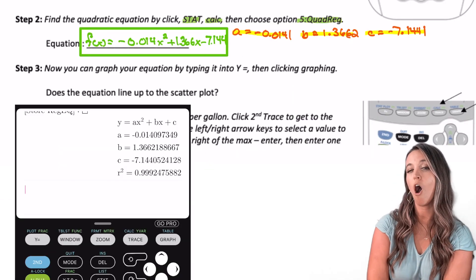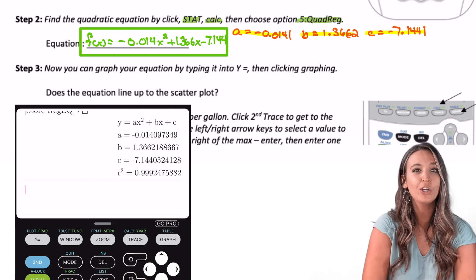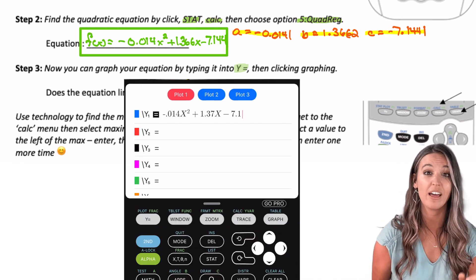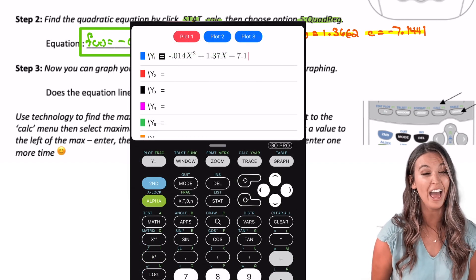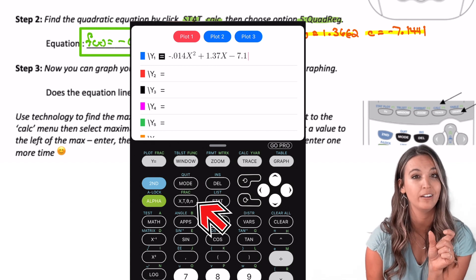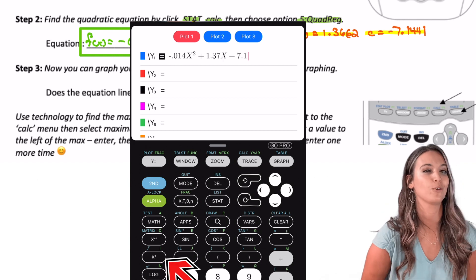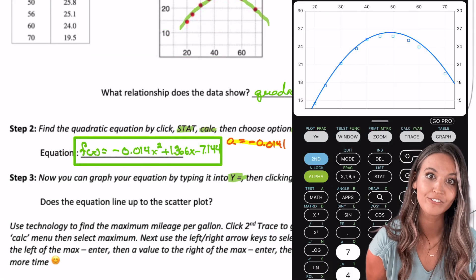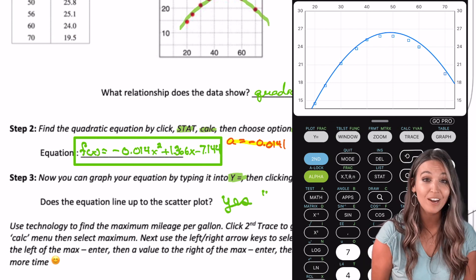I wonder how well our quadratic function models this data. Let's find out! We're going to graph this equation in our calculator. To do this, we click y= and then we're going to type in our quadratic function. To type this, we're going to need to know how to type the variable x. Well, that button is just one to the right of the green alpha button. We also need to know how to square something. That's two below the green alpha button. Take a moment to type it in. Now we can press graph. And look at that! My quadratic function models my data really well.